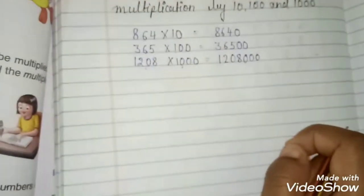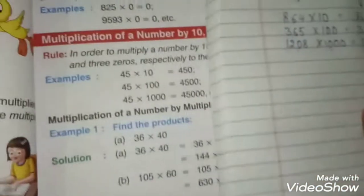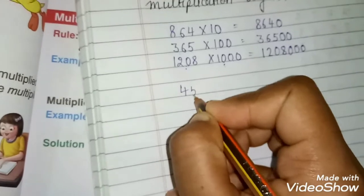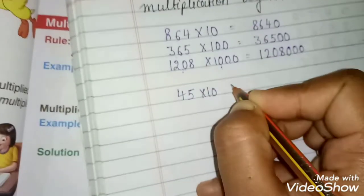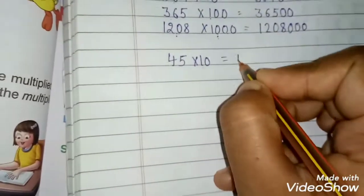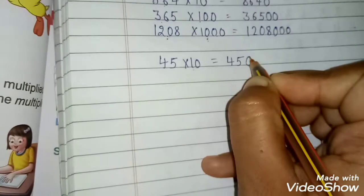So like this you can do. One more example I am taking from your book. 45. 45 multiply by 10 is equal to. Write the digit as it is. Then one zero you have. One zero at the right.